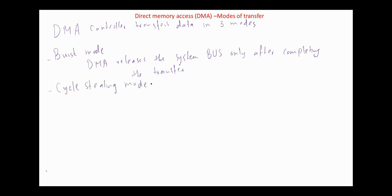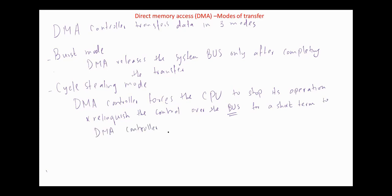The second mode is cycle stealing mode. In this mode, the DMA controller forces the CPU to stop its operation and relinquish control over the bus for a short term, one or more clock cycles. For example, after the transfer of one byte, the DMA controller releases the bus. So in this mode, the DMA controller steals the clock cycle for transferring every byte.